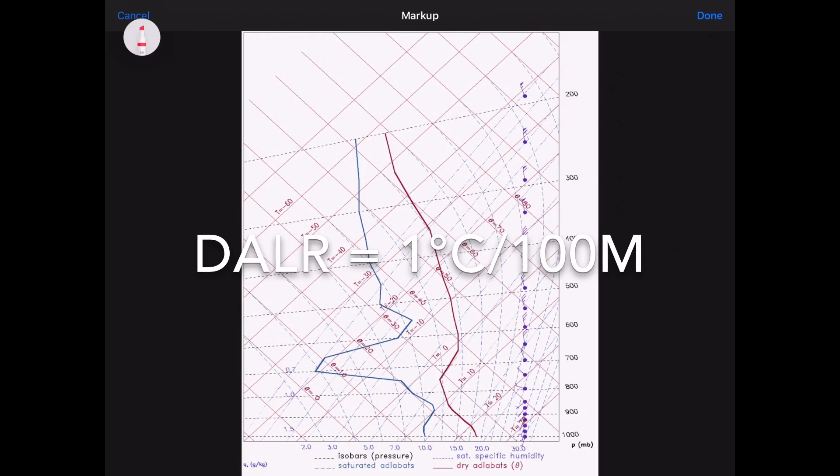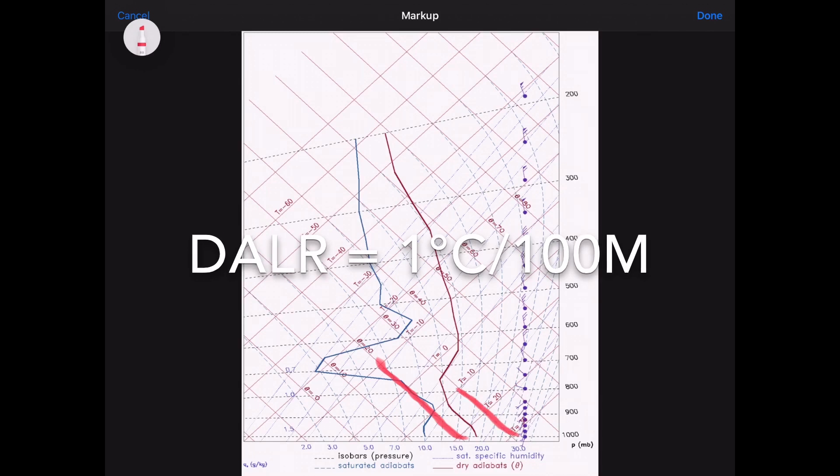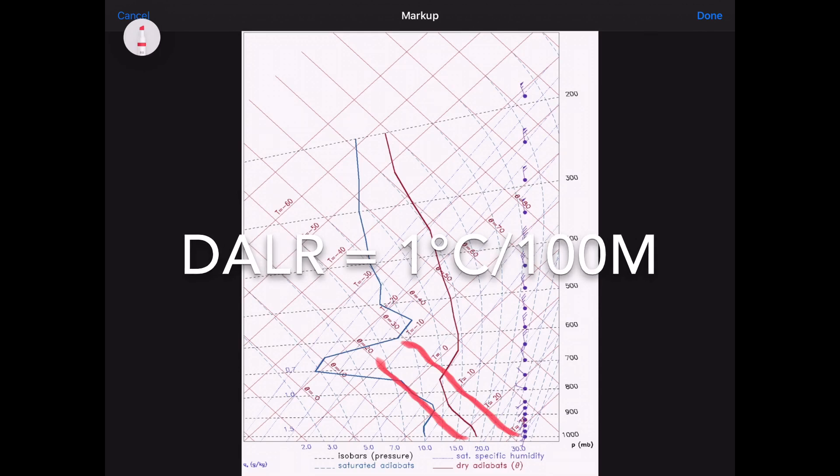The third constant goes from bottom right to top left. Okay now this is the dry adiabatic lapse rate or as the thermal leaves the ground that's the rate at which it cools as it rises through the atmosphere. Okay so it's a very important line. That's the DALR.